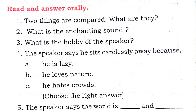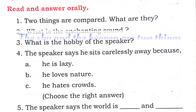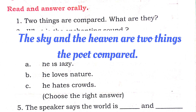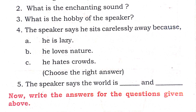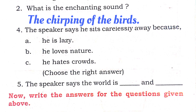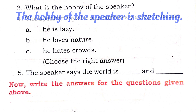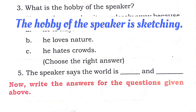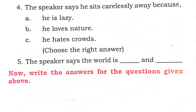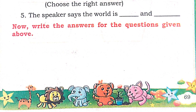Read and answer. One: Two things are compared — what are they? The sky and the heaven are the two things the poet compared. What is the enchanting sound? The chirping of the birds. What is the hobby of the speaker? The hobby of the speaker is sketching and drawing. The speaker sits carelessly away because he loves nature. The speaker says the world is peaceful and serene.